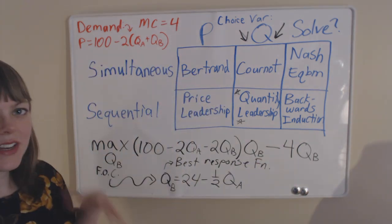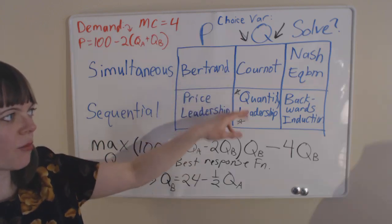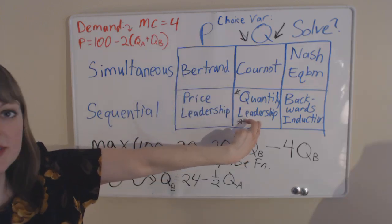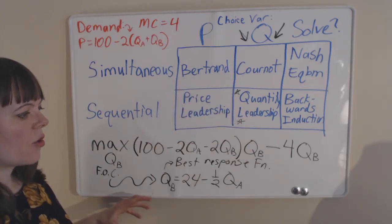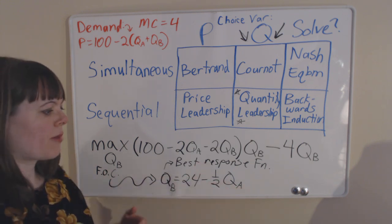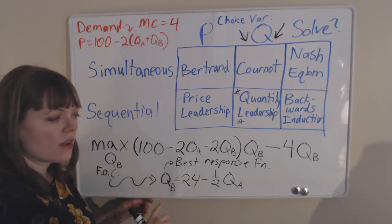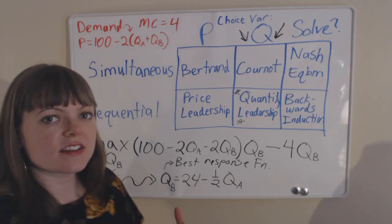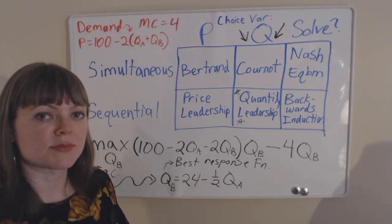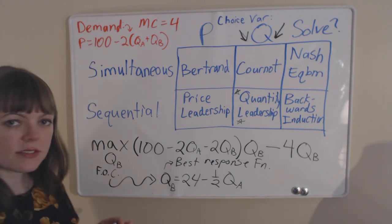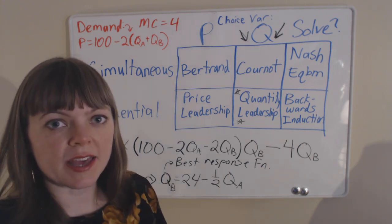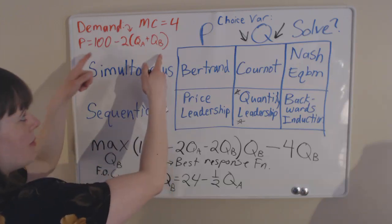Once we have this, we need to know which one of these are we in? Right now we're going to be in quantity leadership. Working our way backwards through backwards induction, firm A knows that this is what B is going to do. So firm A can take that into account when they do their own maximization problem.